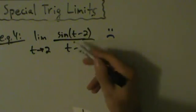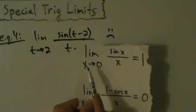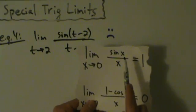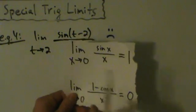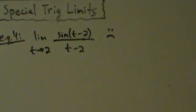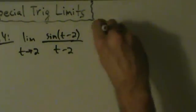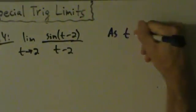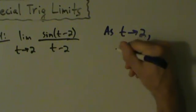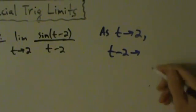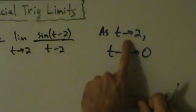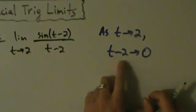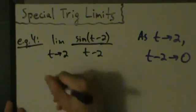Let's see if we can manipulate this to use the special trig limit. We want the argument of sine, the denominator, and the limit variable to all be the same thing, and we also need the limit to be approaching 0. Here we have t approaching 2, with t minus 2 in the argument and denominator. As t approaches 2, t minus 2 approaches 0 — subtract 2 from both sides.